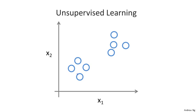Given this dataset, an unsupervised learning algorithm might decide that the data lives in two different clusters. So there's one cluster and there's a different cluster. And the unsupervised learning algorithm may break this data into these two separate clusters. So this is called a clustering algorithm, and this turns out to be used in many places.